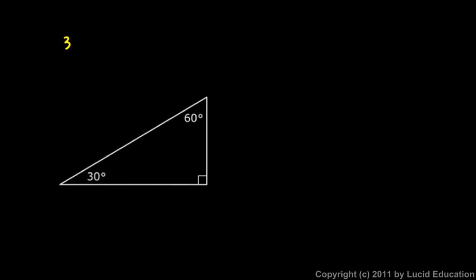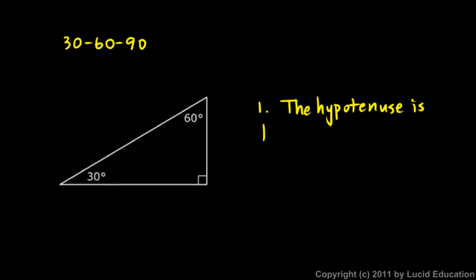Now look at this triangle — this is a 30-60-90 triangle, with a 30-degree angle, a 60-degree angle, and a 90-degree angle. There are two things always true for 30-60-90 triangles. The first is that the hypotenuse is always twice as long as the short leg. So regardless of the triangle's size, the hypotenuse equals 2 times the short leg.